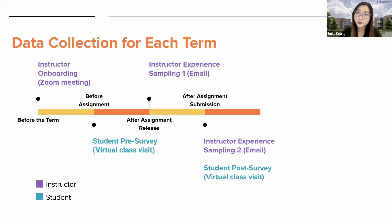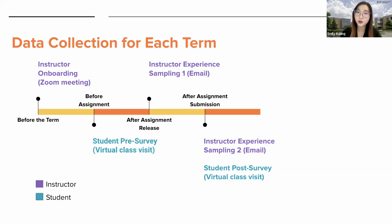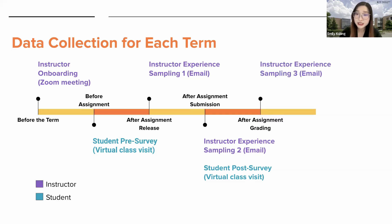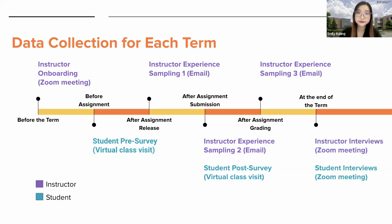After the assignment was submitted, we sent another email to instructors to understand any questions or comments that the students had, and we also visited the class again to administer the post-survey. The post-survey contained similar questions as the pre-survey so that we could compare responses before and after the assignment. After the assignment was graded, we asked instructors about student grades as well as any other feedback. At the end of the term, we conducted semi-structured interviews with both instructors and students.